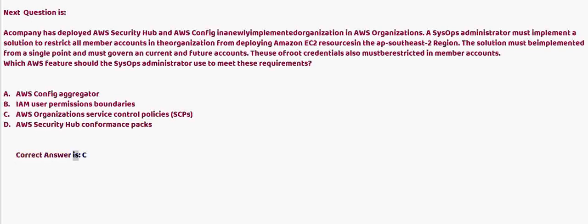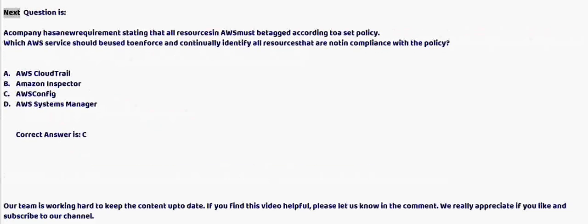Next question: A company has a requirement that all resources in AWS must be tagged according to a set policy. Which AWS service should be used to enforce and continually identify all resources that are non-compliant with the policy? Option A: AWS CloudTrail. Option B: Amazon Inspector. Option C: AWS Config. Option D: AWS Systems Manager. The correct answer is C.